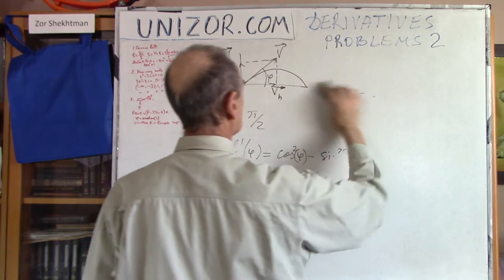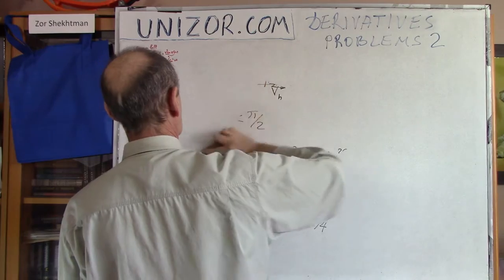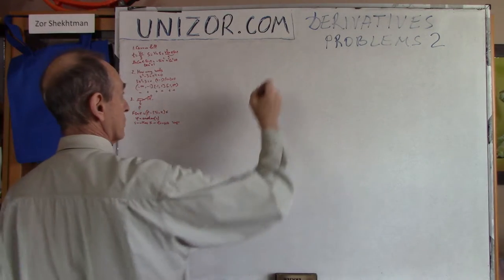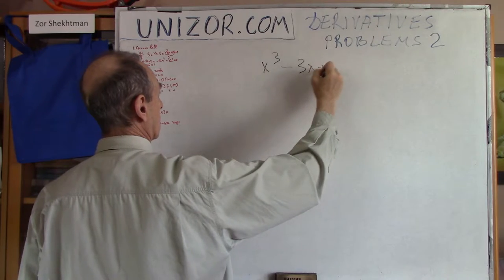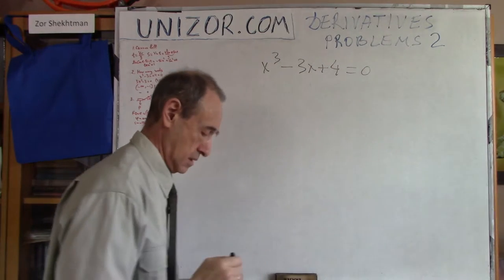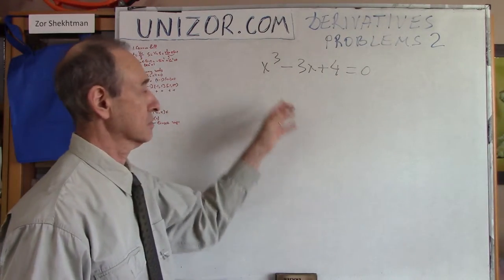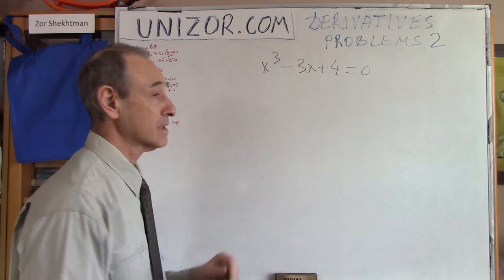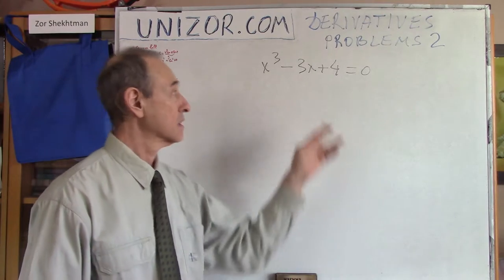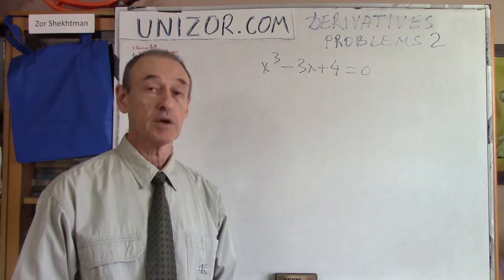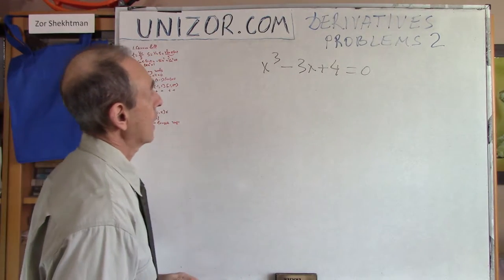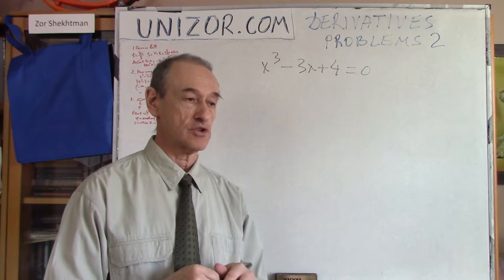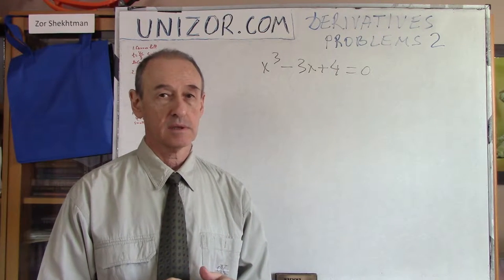The next problem is not as physical as the first one. Given a cubic equation, we don't need to solve it — instead, I'm asking how many zero points, how many solutions, this particular equation has. How can we determine how many solutions a particular equation has? Here is the methodology I suggest.